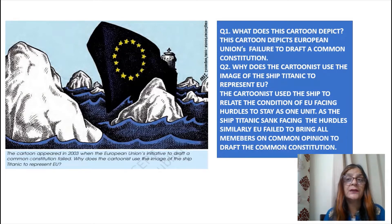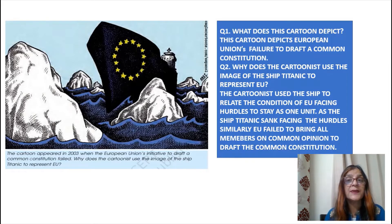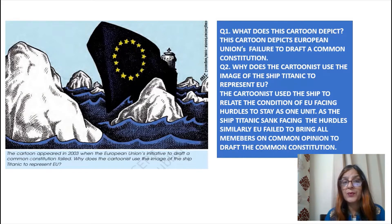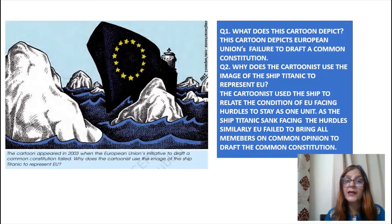The next cartoon depicts the European Union's failure to draft a common constitution. The cartoonist uses the image of the Titanic ship to represent the EU — the Titanic was a very giant ship but it sank, and similarly the EU's path toward a common constitution was compared to the Titanic. There was no common opinion that could be formed among the European members related to the common constitution.